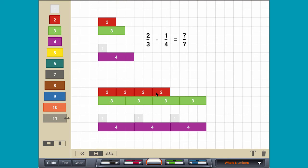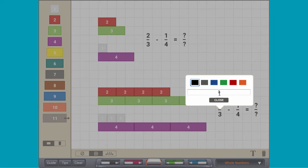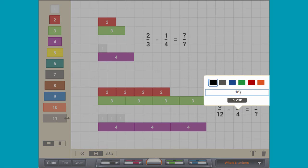The fractions two-thirds and one-quarter can be expressed as equivalent fractions eight-twelfths and three-twelfths.